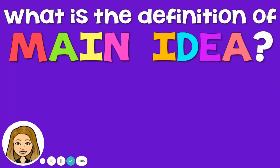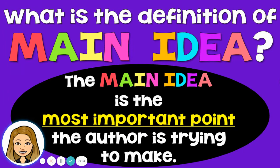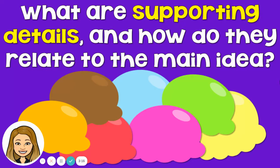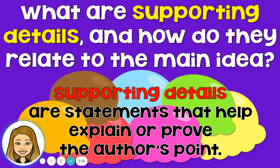So let's review what we've learned so far. What is the definition of main idea? The main idea is the most important point the author is trying to make, or what the author is trying to say. What are the supporting details and how do they relate to the main idea? The supporting details are statements that help explain or prove the author's point, or the main idea.